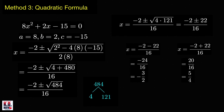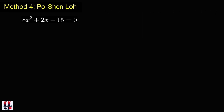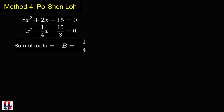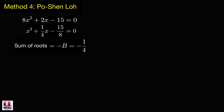Now let's move to our last technique, the method introduced by Professor Po-Shen Loh. First, make the coefficient of x² equal to 1 by dividing both sides by 8, giving x² plus (1/4)x minus 15/8 equals 0. When the coefficient of x² is 1, we know the sum of roots equals the negative of the coefficient of x. So the sum of roots is equal to negative 1/4.